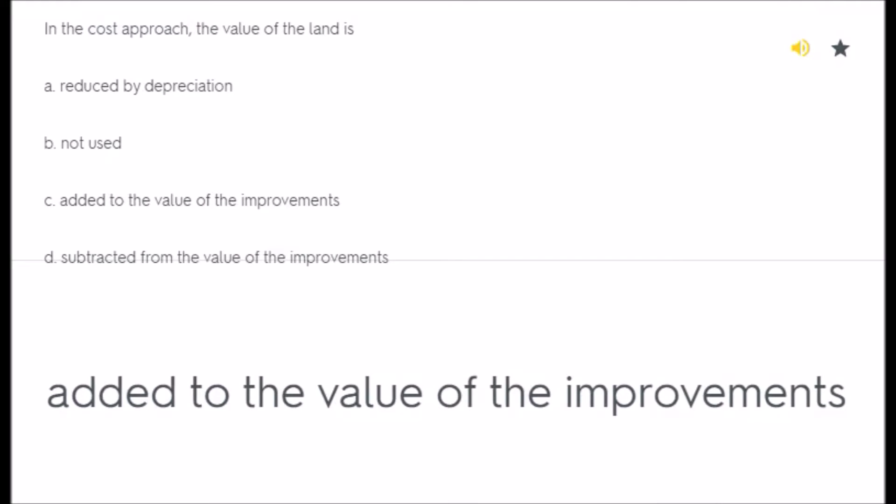In the cost approach, the value of the land is: A) reduced by depreciation, B) not used, C) added to the value of the improvements, D) subtracted from the value of the improvements. Answer: added to the value of the improvements.